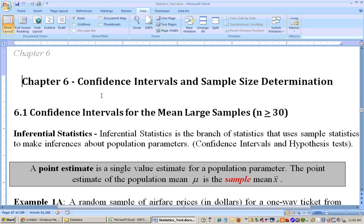This is Chapter 6, where we start inferential statistics. Chapter 6 is on confidence intervals and sample size determination. Section 6.1 is on confidence intervals for the mean, mu, and this is talking about large samples when n is greater than or equal to 30. When n is greater than or equal to 30, we can use z-scores because the distribution of the sample means will be approximately normal.